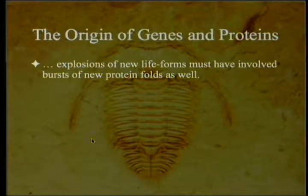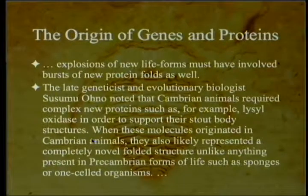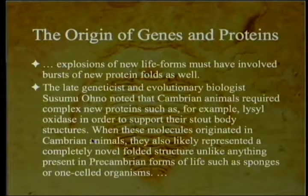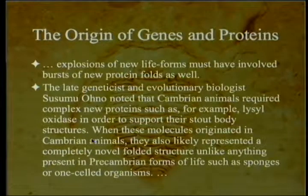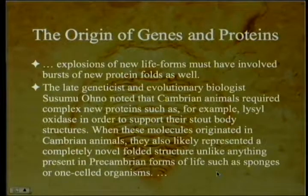Explosions of new life forms must have involved bursts of new protein folds as well, because you need new protein folds to make enzymes that do certain kinds of new actions. The late geneticist and evolutionary biologist Susumu Ohno, who invented the term junk DNA, noted that Cambrian animals required complex new proteins — such as lysyl oxidase — to support their stout body structures. When these molecules originated in Cambrian animals, they also likely represented completely novel folded structures unlike anything present in pre-Cambrian forms of life such as sponges or one-celled organisms.